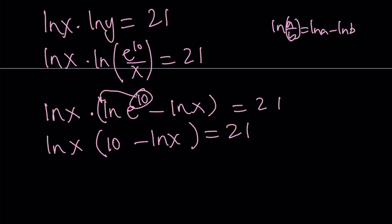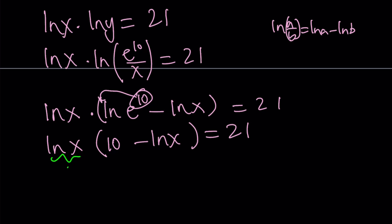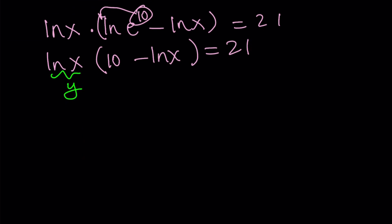Now we can go ahead and use substitution again to solve this problem. Let's call this z, not y because we have a y in the equation. So we get z times 10 minus z equals 21. And this gives us a quadratic equation. Let's simplify it. 10z minus z squared equals 21, putting everything on the right-hand side, z squared minus 10z plus 21 is equal to 0.